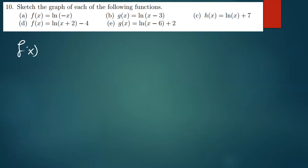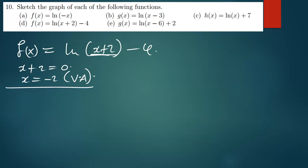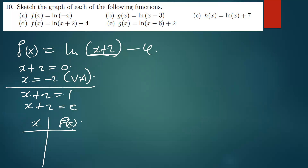The last one: f(x) = ln(x + 2) − 4. Find the vertical asymptote by equating x plus 2 to zero, giving x equals negative 2. For table values, equate x plus 2 to one: x equals negative 1. Equate x plus 2 to e (2.7): x equals e minus 2.